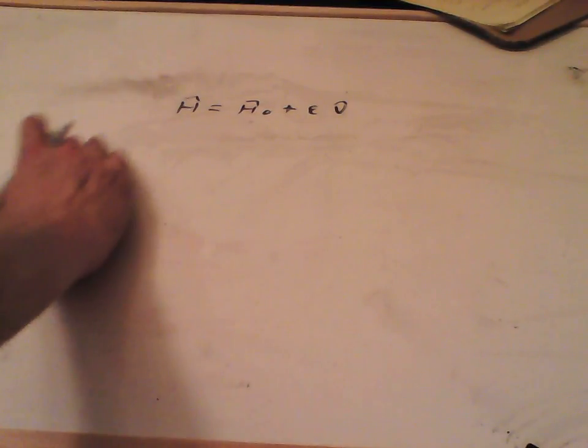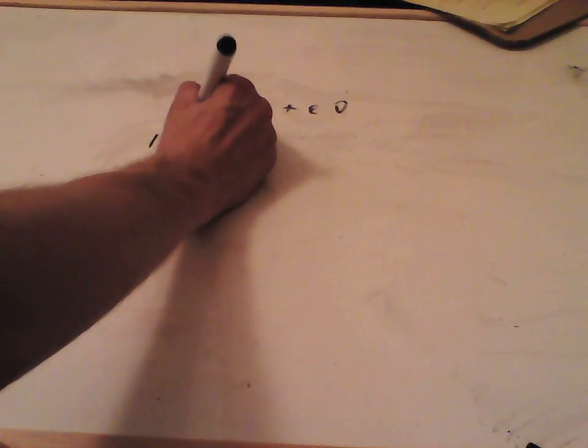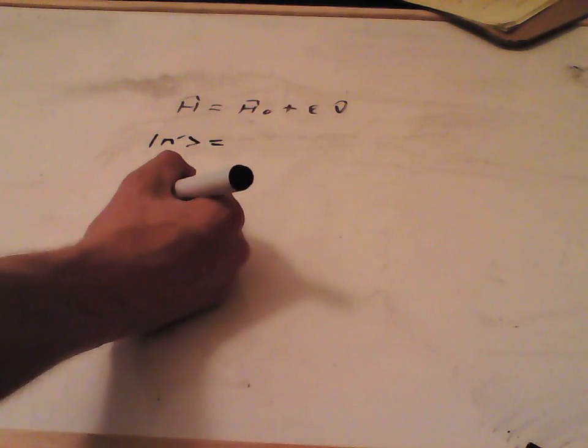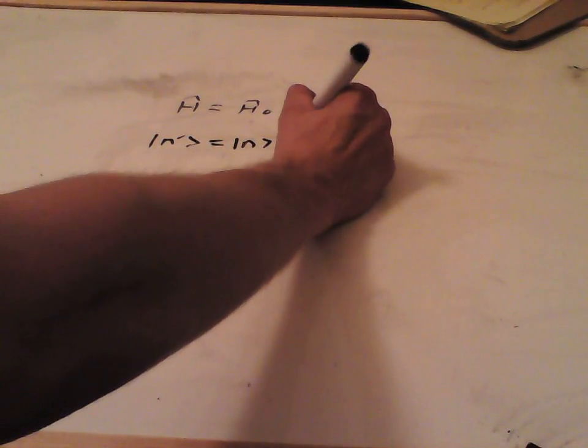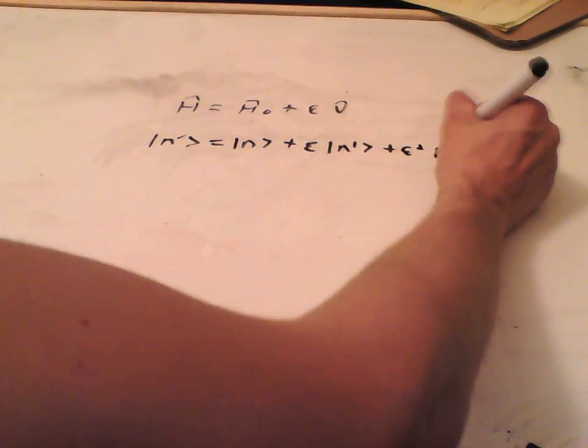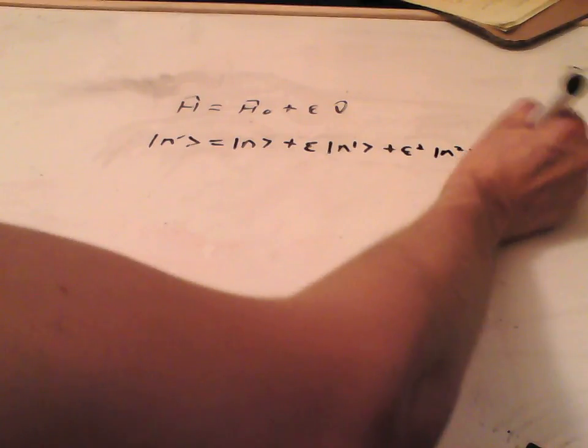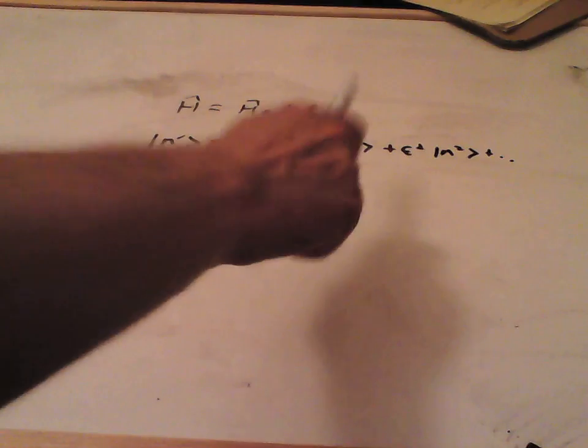So, our new eigenstate of this wave function, we're going to write that as n prime. And that's going to consist of the original eigenstate n, plus epsilon, times by a first order change, plus epsilon squared, times by a second order change, and so on. So, basically doing the Taylor series.